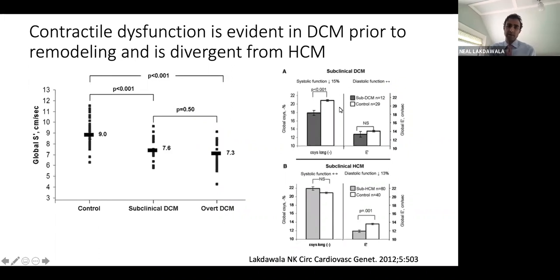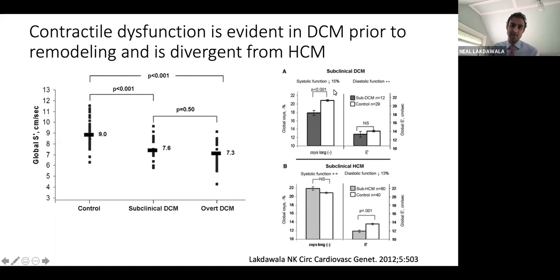When we compared this to patients with HCM-associated sarcomere mutations, we essentially recapitulated what had been seen in isolated muscle and in vitro studies. In DCM-causing sarcomere mutations, we see a depression in systolic function without a measurable change in diastolic function, whereas in preclinical hypertrophic cardiomyopathy — individuals with a sarcomere mutation associated with HCM but without LVH on 2D echo — there was no change in systolic function but a depression in diastolic function.